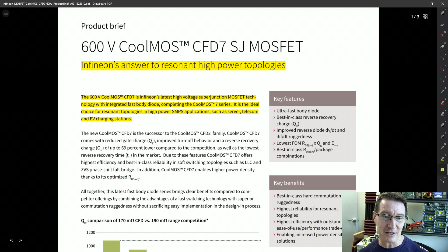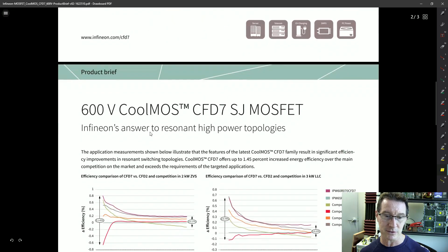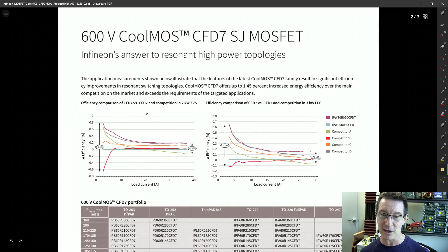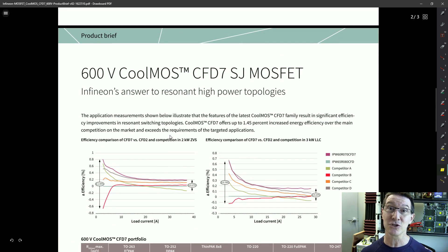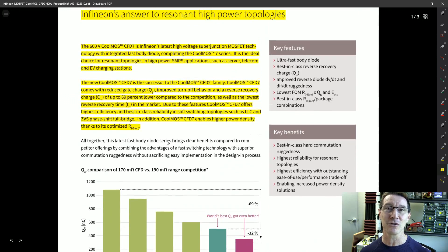It's Infineon's latest high voltage super junction MOSFET technology with integrated fast body diode complementing the CoolMOS7. It's the ideal choice for resonant topologies in high power switch mode power supply applications such as server, telecom, EV charging stations and all that sort of stuff. And you can go into the technical details about why this is the best in the business. Anyway, they compare it to all their competitors. But anyway, yeah, that's the jobby that's used in here. So this is a resonant mode controller.